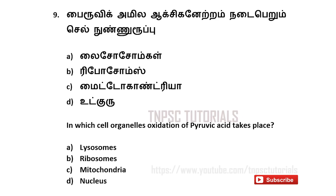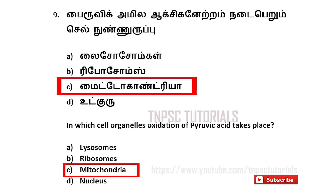Ninth one. In which cell organelle does oxidation of pyruvic acid take place? A) Lysosome, B) Ribosomes, C) Mitochondria, D) Nucleus. And the answer is C — Mitochondria.